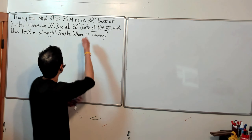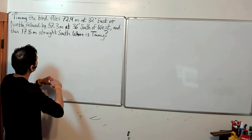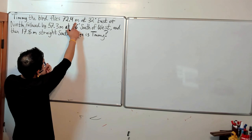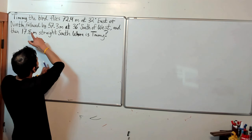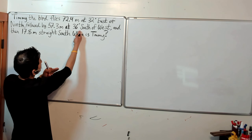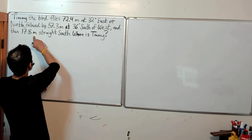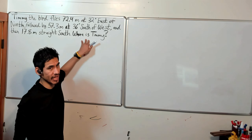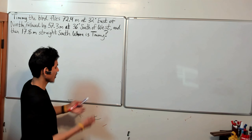So let's look at what Timmy the bird is doing. Timmy flies 72.4 meters at 32 degrees east of north. Then he flies 57.3 meters at 36 degrees south of west. And then 17.8 meters straight south. We want to figure out where he is at the end — we want to find the resultant vector by adding these three vectors together.